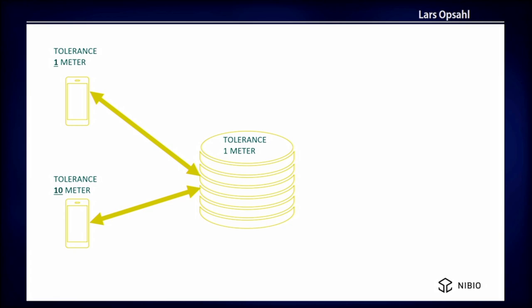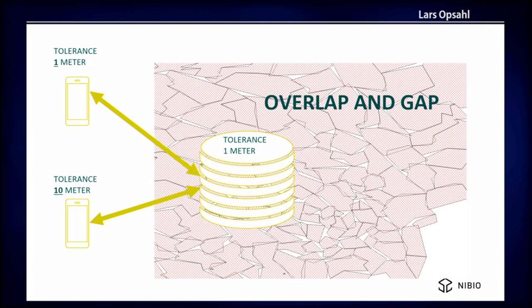Look at this case — we talked about borders. Let's say we have a client: one with a tolerance of one meter and one with a tolerance of ten meters. In the database we try with one meter. You know what happens: you will get overlapping gaps everywhere.